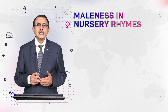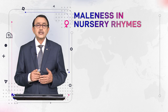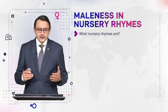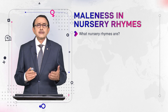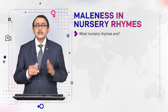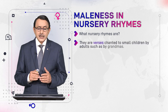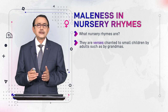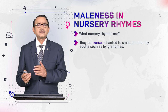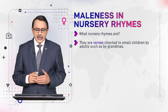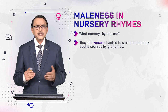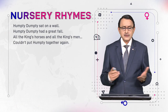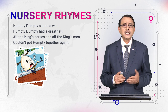Now this time we will see how nursery rhymes present males, what image of males is created by rhymes. So first of all let me remind you what nursery rhymes are — they are verses chanted to small children, somebody else chants them to the children, such as grandmamas, teachers and elders at home. For example, this is the very famous nursery rhyme Humpty Dumpty.